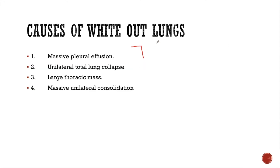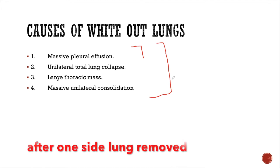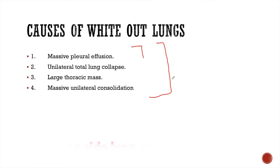The most important causes for unilateral whiteout lung are massive pleural effusion, unilateral total lung collapse, large thoracic mass, and massive unilateral consolidation. There are other infrequent causes also, like after removal of a lung, but these four are the commonly seen causes of whiteout lungs and you should be able to differentiate them from an X-ray.